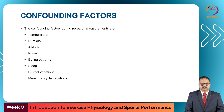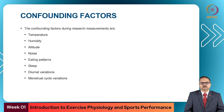There are several confounding factors during research measurements: temperature, humidity, altitude, noise, eating patterns, sleep, diurnal variations, and menstrual cycle variation. Each of these factors, either singly or in combination, can affect your research data.